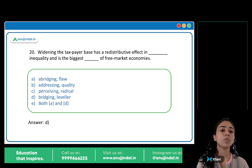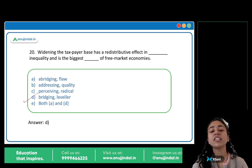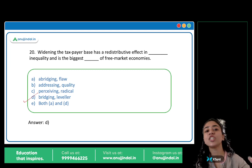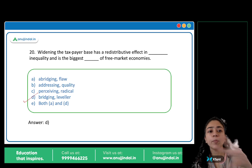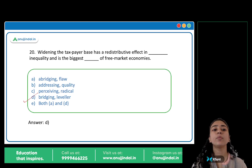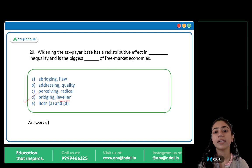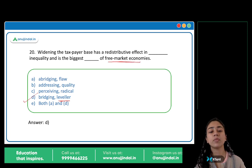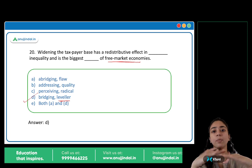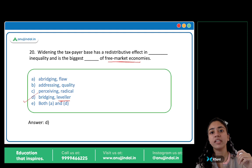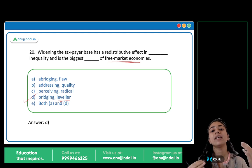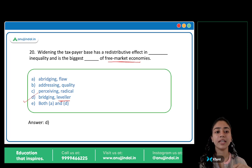The answer is option D: Bridging and leveler. Widening the taxpayer base has a redistributive effect in bridging inequality — to bridge the gap, close the gap, remove inequality. And it is the biggest leveler of free market economies — it levels free market economies.